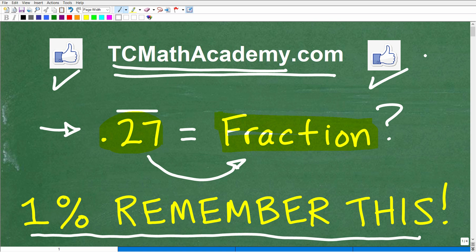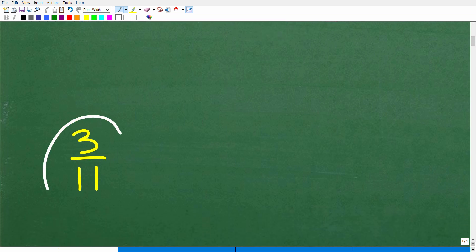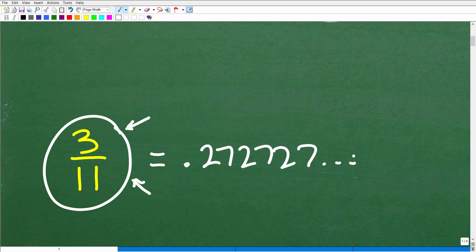So 0.27 repeating, what is the fraction that is equivalent to this decimal? Well, let's take a look at that right now. It is 3 over 11. If you have your calculator handy, take 3 and divide it by 11, and what you're going to get is 0.272727 going on and on. This pattern of these two sevens repeats, so we write 0.27 and that is repeating.